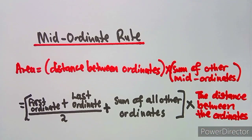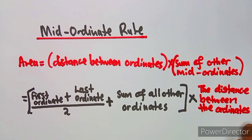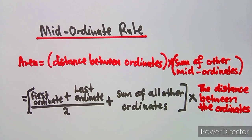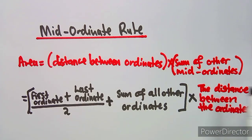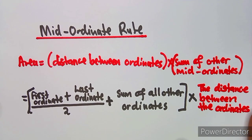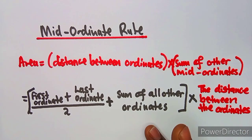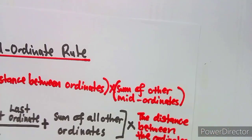The mid-ordinate rule is one of the important formulas you need to know, and you are actually given this formula in your formula sheet. From this formula, we are given that the area is the distance between ordinates times the sum of the mid-ordinates. I'm going to explain these formulas and we will be given ordinates, which are points.